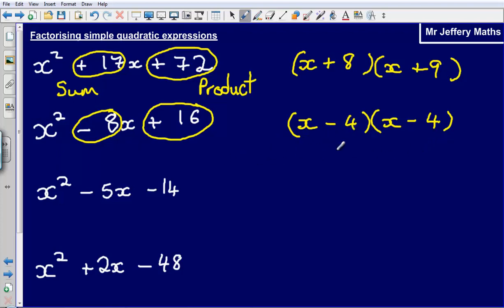We could also write x minus 4 and x minus 4 as x minus 4, oops that doesn't look right, let's fix that. We could also write x minus 4, x minus 4 as x minus 4 squared.